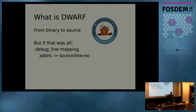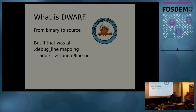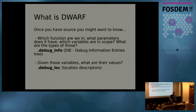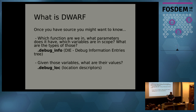When I wrote the title 'going from binary to source,' that's just part of what DWARF is, because if that was all there is, you just need the debug line mapping — you take an address, that's the source line. But DWARF does so much more. You want to know which functions there are, what parameters there are in the function, are there variables, what is the scope of the variables, what are the types of the various things.